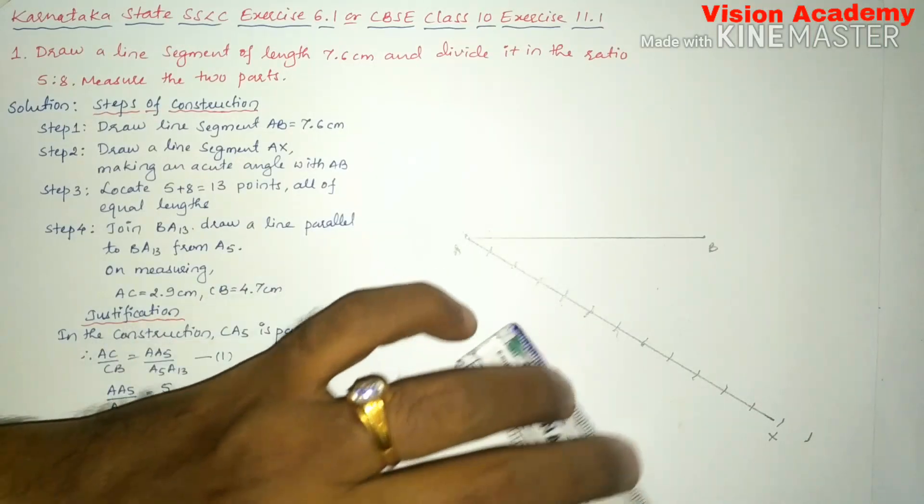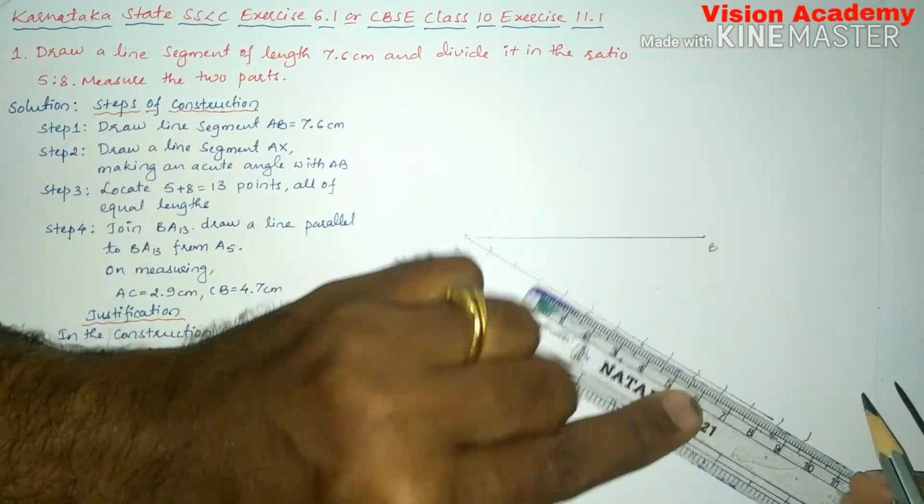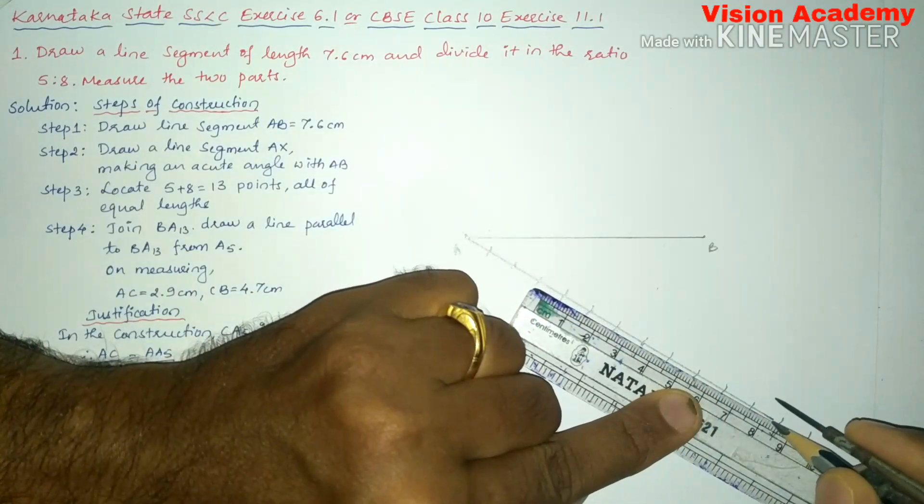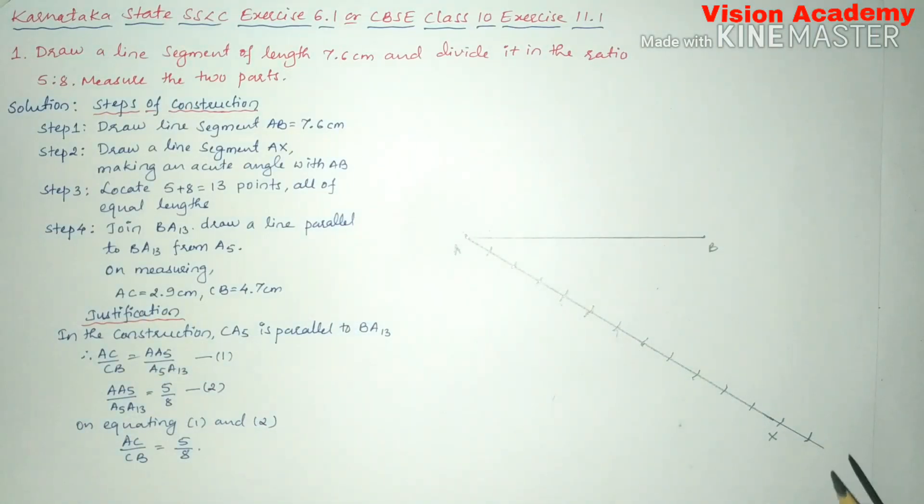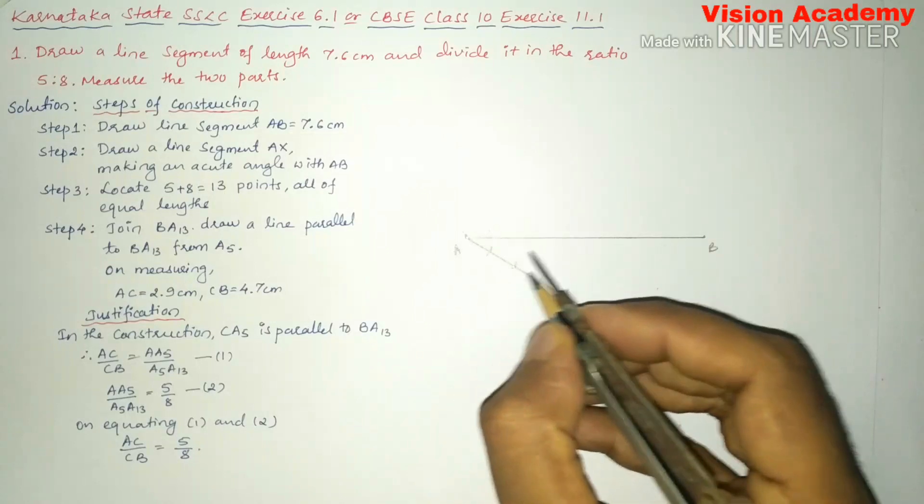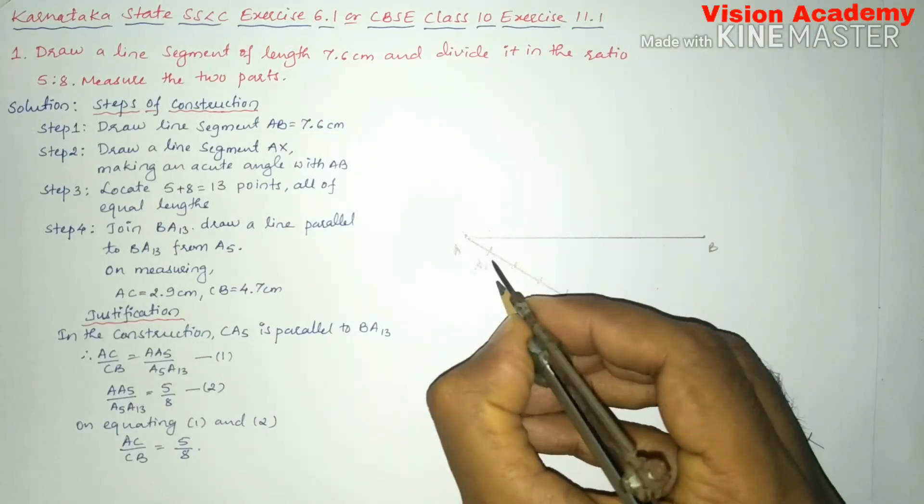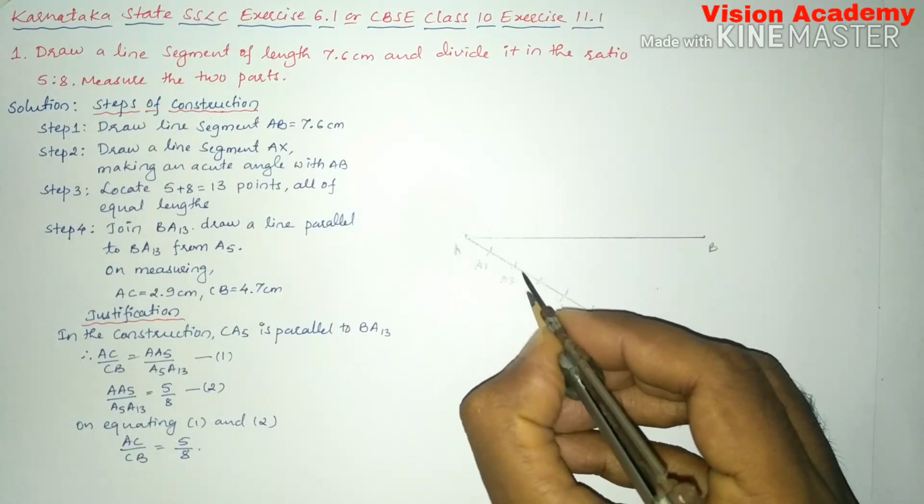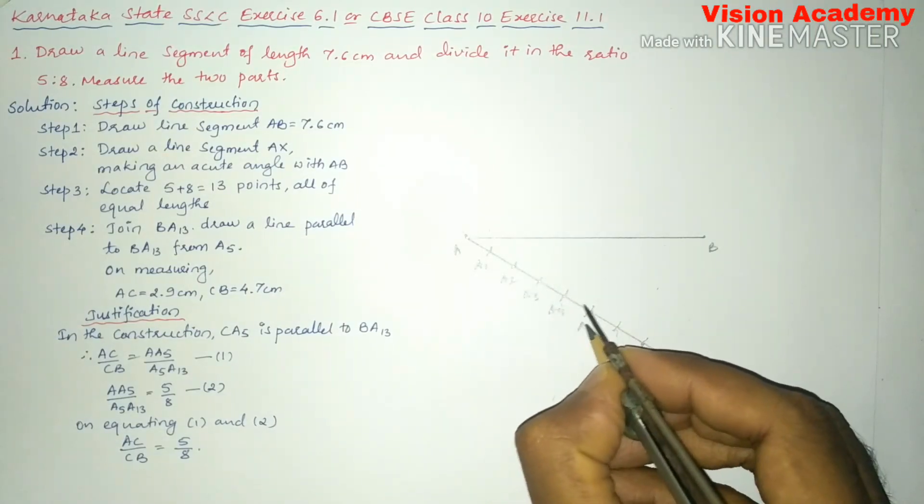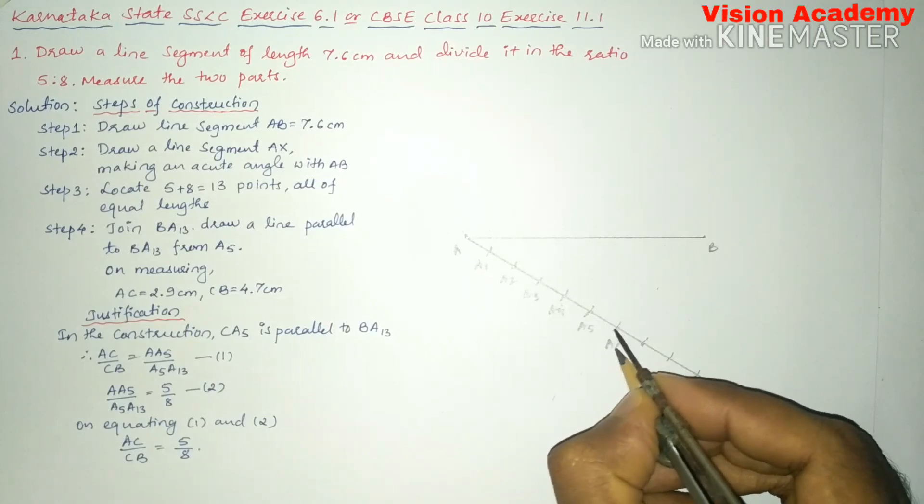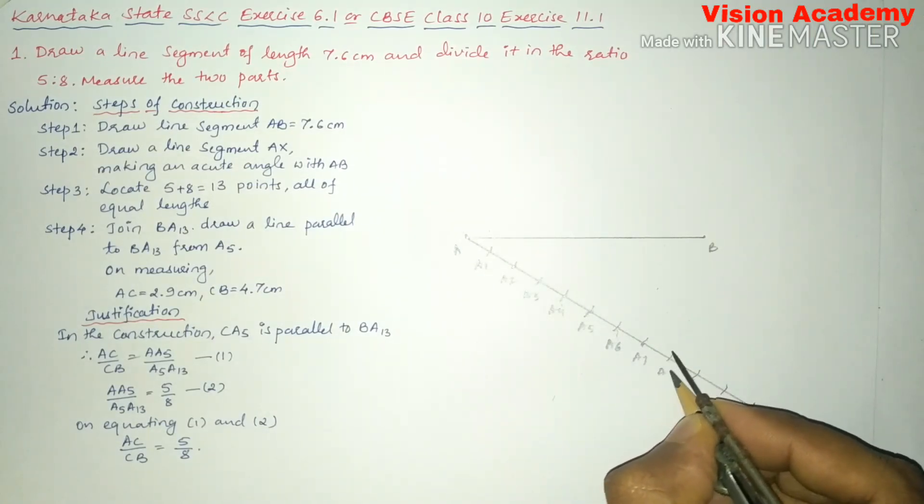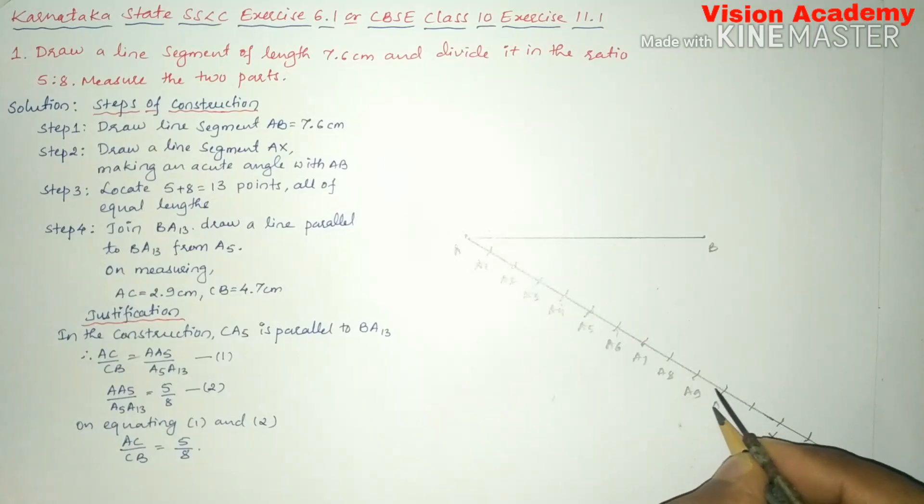So let us continue this line. Let us write this one as X. Let us name all these sections as A1, A2, A3, A4, A5, A6, A7, A8, A9, A10, A11. This is A12. This is A13.